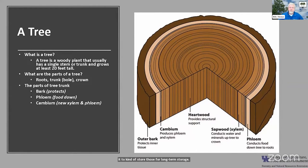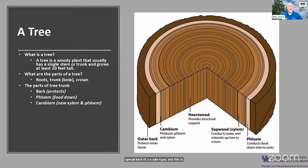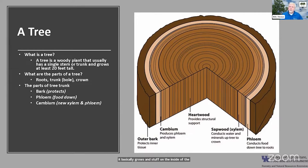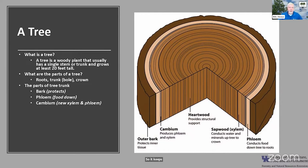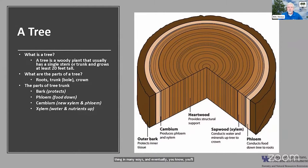Just inside the phloem we have a very special cell type — our cambium. This is meristematic tissue that can keep growing and dividing. The way it grows is that stuff on the inside of the cambium layer becomes xylem — the new sapwood. On the outside, it becomes the phloem or conductive tissue. It keeps reproducing over and over throughout the life of the tree. Eventually you end up with heartwood or solid xylem, which provides not only transport for water and nutrients but also structural support for the tree.